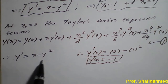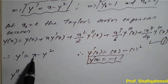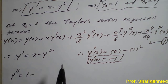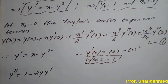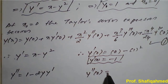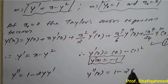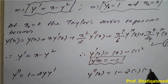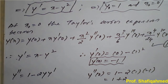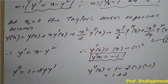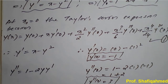To get y''(0), we differentiate y' = x - y² with respect to x: y'' = 1 - 2y·y'. Substituting y = 1 and y'(0) = -1: y''(0) = 1 - 2(1)(-1) = 1 + 2 = 3. So y''(0) = 3.